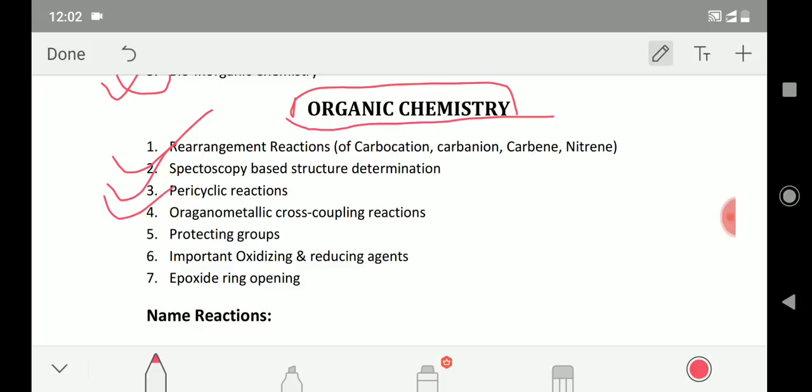Then the pericyclic reactions. You have to do the Diels-Alder reaction, all the regio and stereo selectivity, and other Alder reactions like that. As a whole, pericyclic reactions - whatever you have read previously, just revise them.